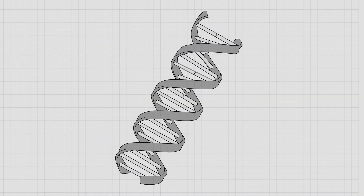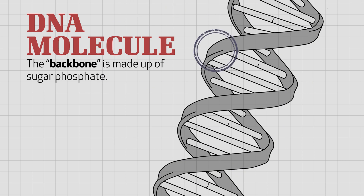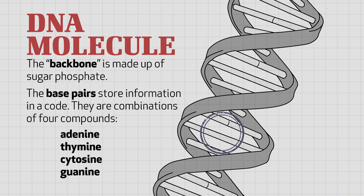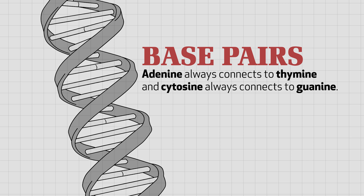DNA is a molecule and the backbone of the molecule is made of a sugar phosphate. The little things that look like stairs are called base pairs. The base pairs store information in a coded language. They're combinations of four compounds: adenine, thymine, cytosine, and guanine. Adenine always connects to thymine and cytosine always connects to guanine.